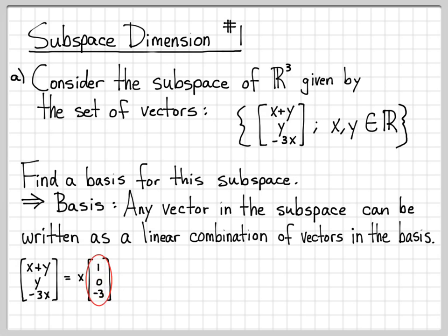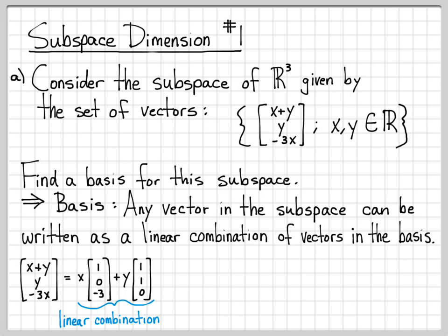Every vector in our subspace has this form, and we can write it as x times the vector (1, 0, -3) — because there's 1x in the first coordinate, no x in the second, and -3x in the third — plus y times the vector (1, 1, 0) — because there's a single y in the first coordinate, a single y in the second, and no y in the third. So I've written this arbitrary vector as a linear combination of the fixed vectors (1, 0, -3) and (1, 1, 0), which means these two vectors must be a basis for the subspace.